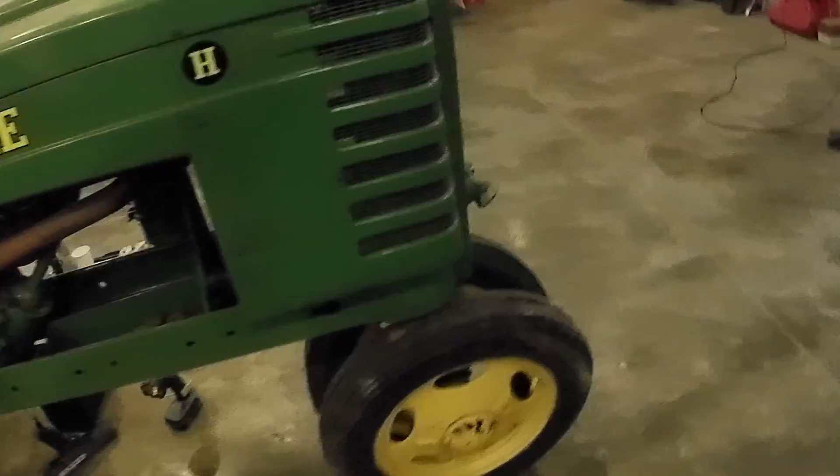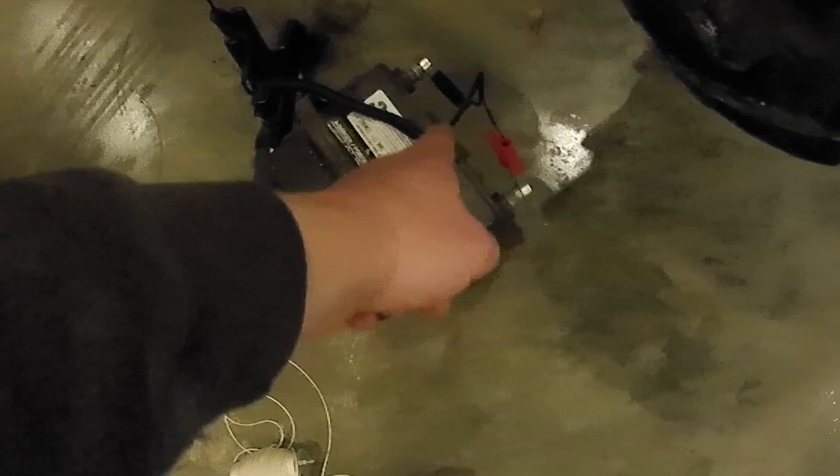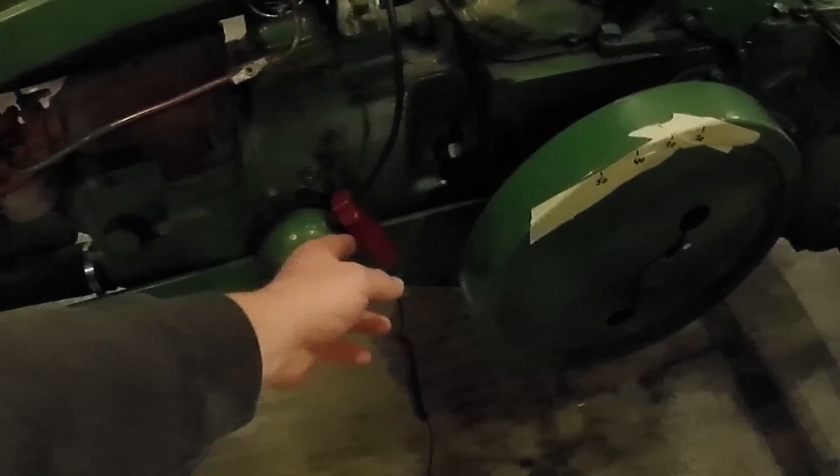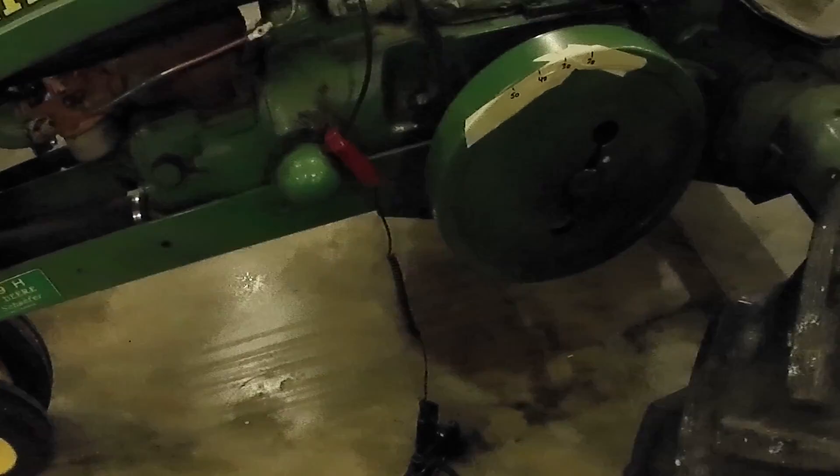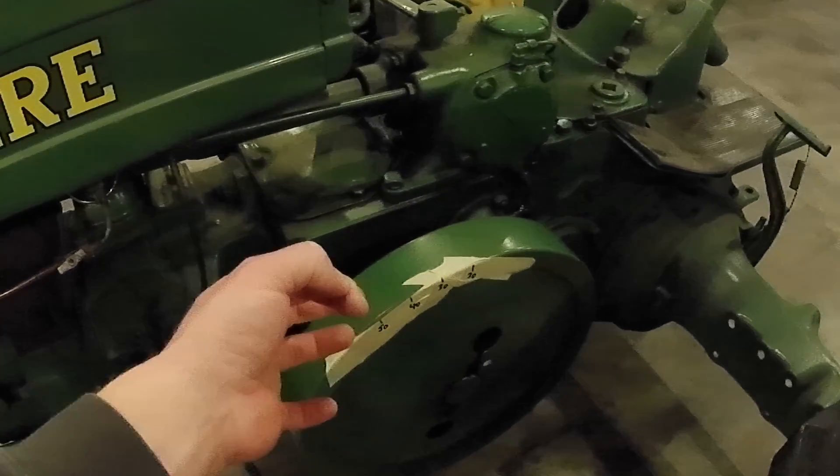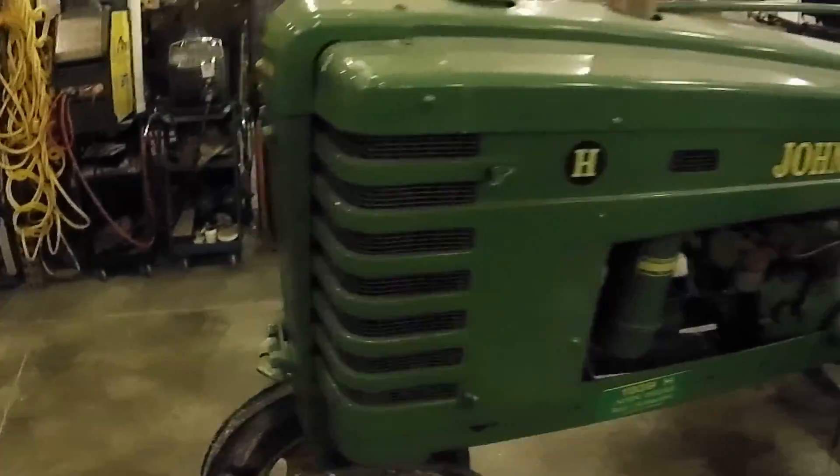The first thing you're going to need is a timing light and a battery. You clip the positive and negative off the timing light. The signal clamp goes on the number one cylinder, which is the left hand side of the tractor. Then you need a string to measure the circumference of your flywheel. You wrap it around the flywheel, pinch your finger on the end of it, and take it to a tape measure to get the measurement.